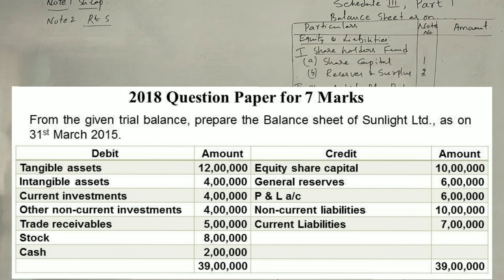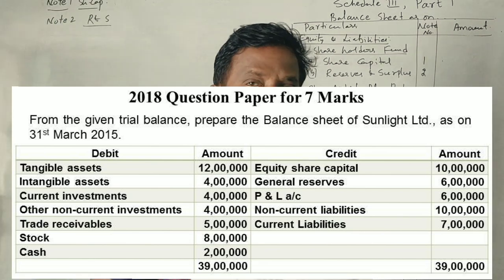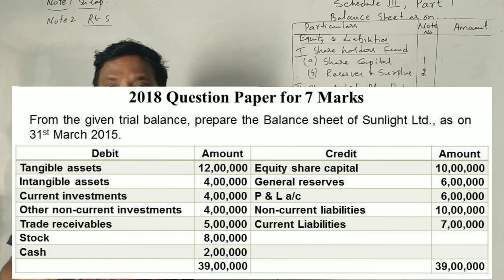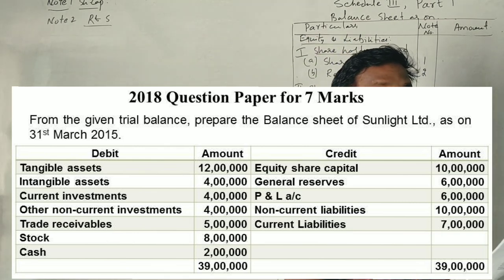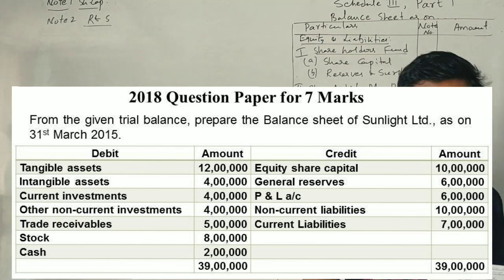In the 2018 question paper, the balance sheet is prepared for 7 marks. From the given trial balance, prepare balance sheet of Sunlight Limited as on 31st March 2015.